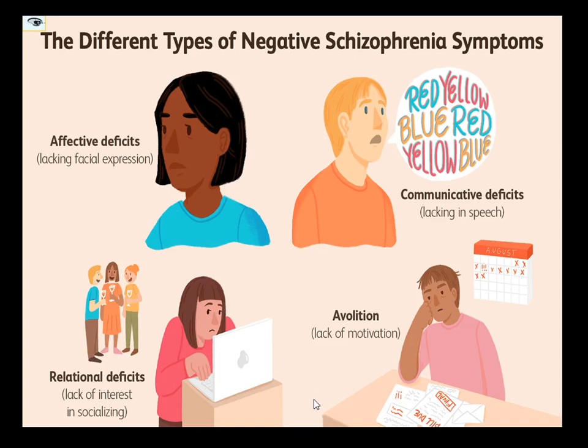Today we are going to be discussing the different types of negative symptoms you can witness under schizophrenia. We are already through with the positive symptoms where we talked about the delusions, the formal thought disorder, and the hallucinations and its various kinds. In this we'll be talking about the various types of negative symptoms. As you can see on the slide, the pictures clearly represent that negative symptoms are all about deficits — how decreased your thoughts or emotions are, and how they are not well expressed.